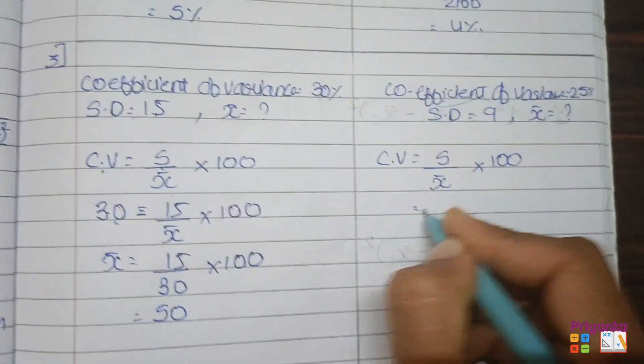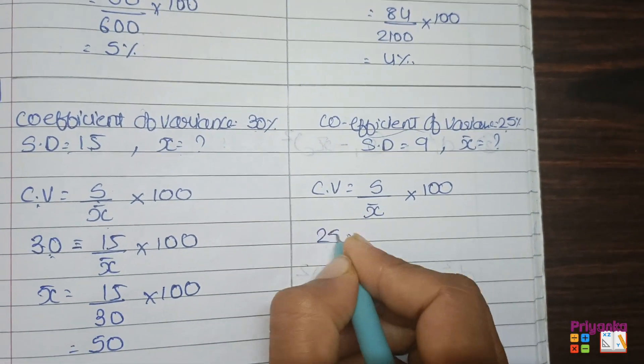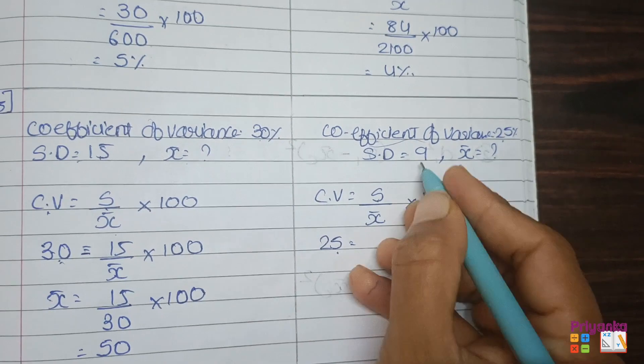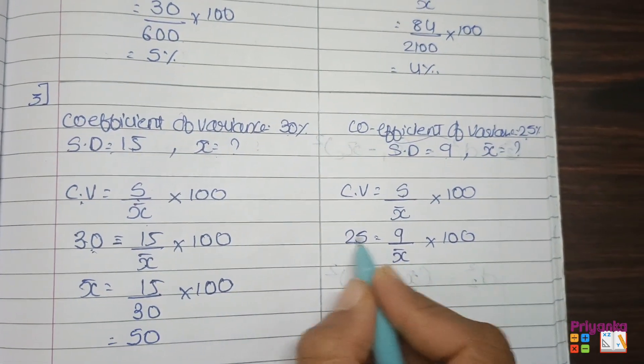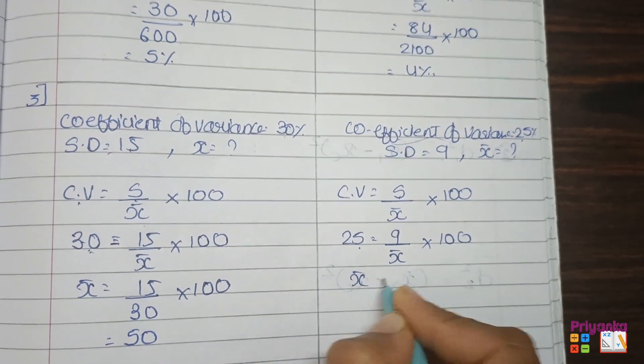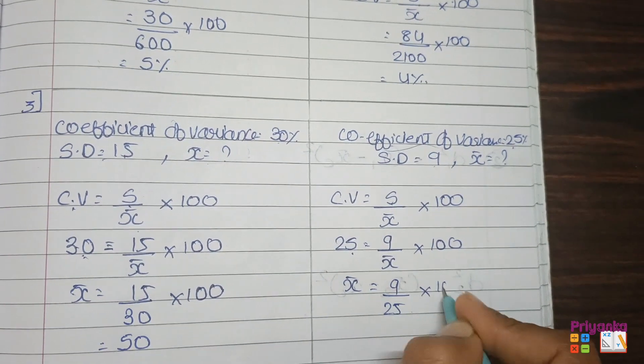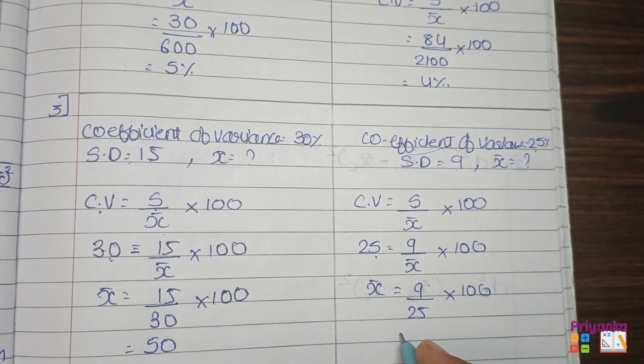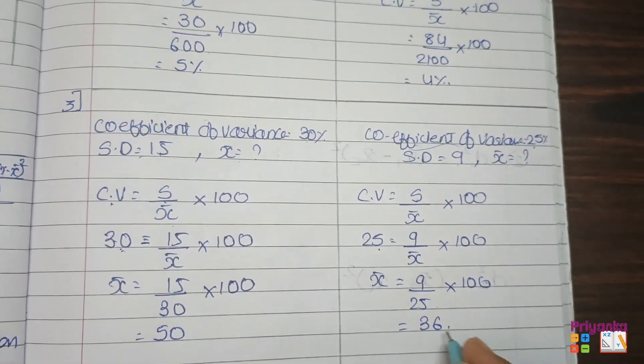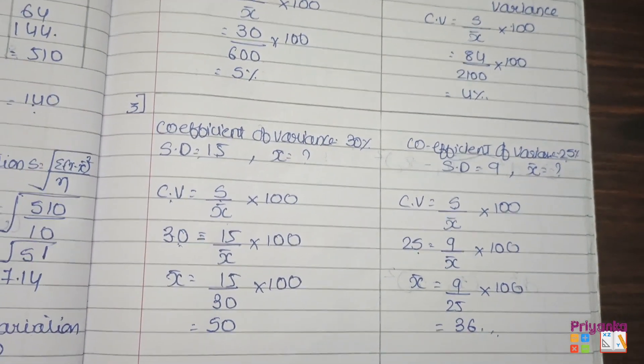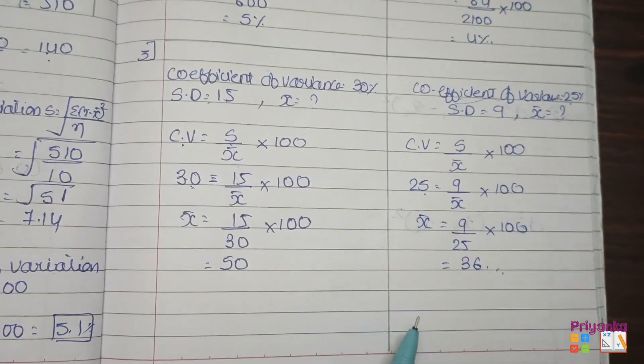Actually moving to the next. Again from the question we will take the coefficient of variance is 25%, so keep 25 for CV. Standard deviation is 9. Mean which is not given. So again swap the position. Mean keep here and coefficient of variance 25 over here. Multiply by 100 and here we get the answer 36. So again we can say that the mean of the first series is 50 and the mean of the second series is 36.